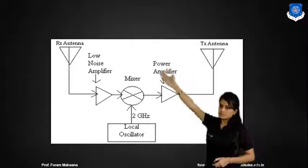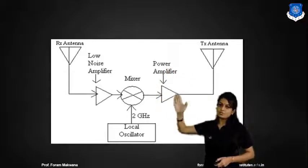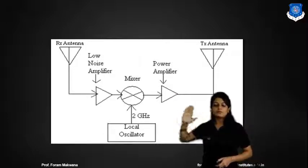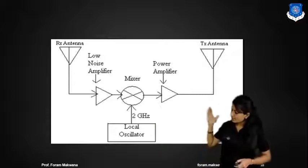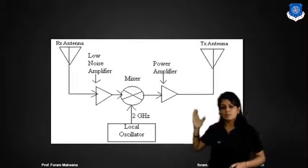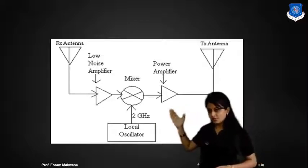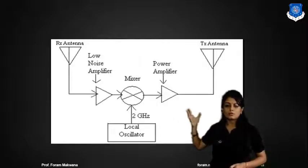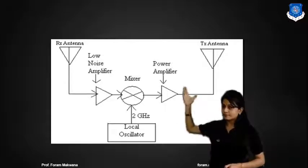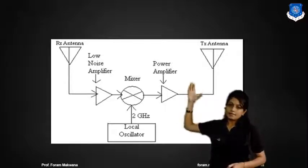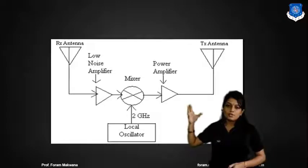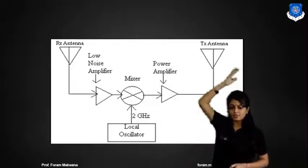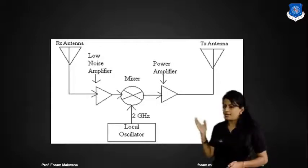First, the receiving antenna will receive a signal. It is applied to the low noise amplifier, which will reduce the effect of noise. That signal is then applied to the mixer, where down conversion or up conversion is done. That signal is amplified by the power amplifier and transmitted by the transmitting antenna.